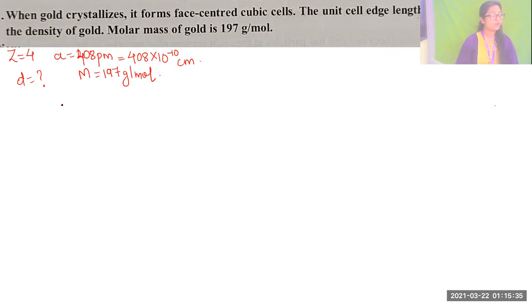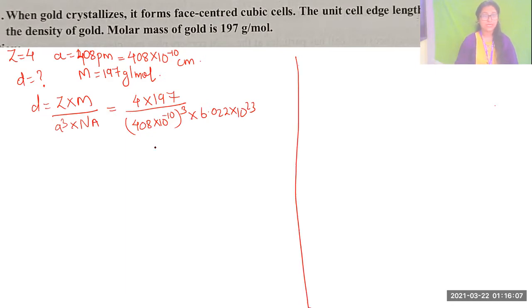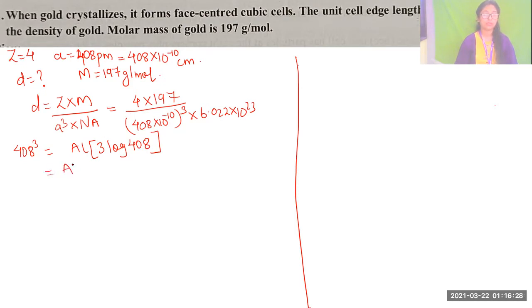We use the density formula D = Z·M / (a³·Nₐ). Substituting: Z = 4, M = 197, a = 408 × 10⁻¹⁰ cm, Nₐ = 6.022 × 10²³. First, calculate 408³ using logs: anti-log of 3·log(408). There are three digits before decimal, so characteristic is 2; from log table, 40 with mean difference 8 gives 6107. So 3 × 2.6107 = 7.8321.